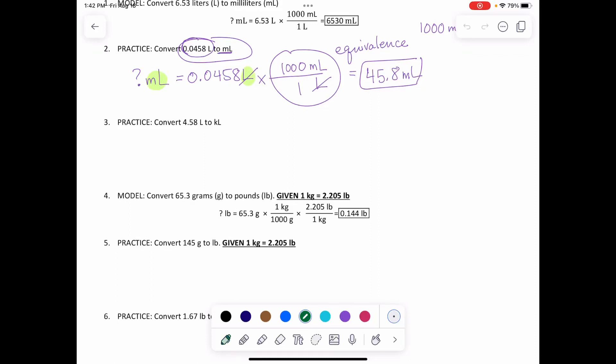All right, now we're going to convert liters to kiloliters. So again, what is it I'm looking for? I'm looking for kiloliters. So question mark kiloliters equals 4.58 liters.